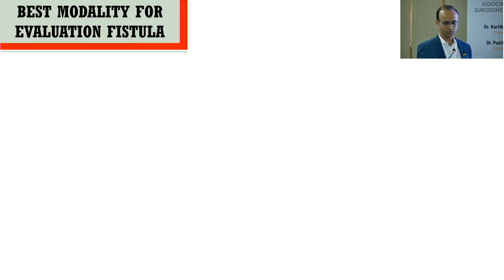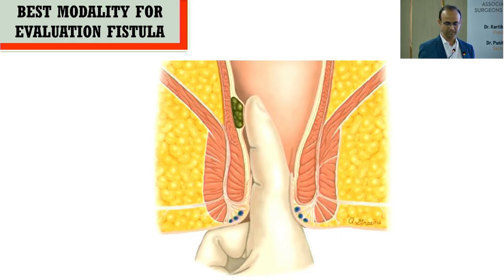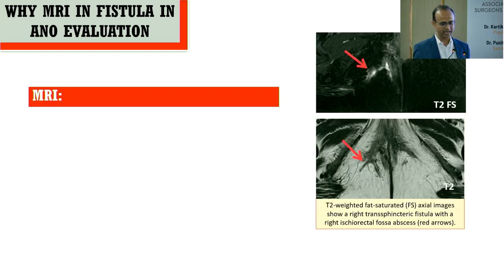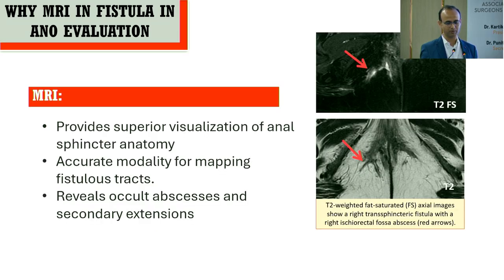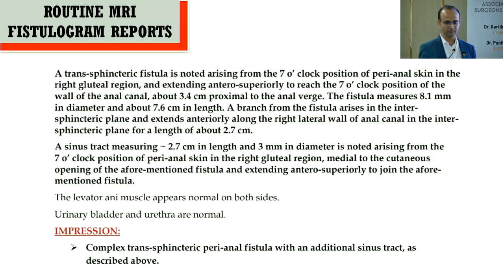The best modality for evaluation of fistula is per rectal examination — there is no alternative for that. MRI is best to provide superior visualization of sphincter anatomy, accurate mapping of fistula tract, and revealing occult disease. However, when we see a typical MRI report, we are literally frustrated and the surgeon's mindset says: 'I will just go and operate on what I feel is better, rather than relying on the MRI.'